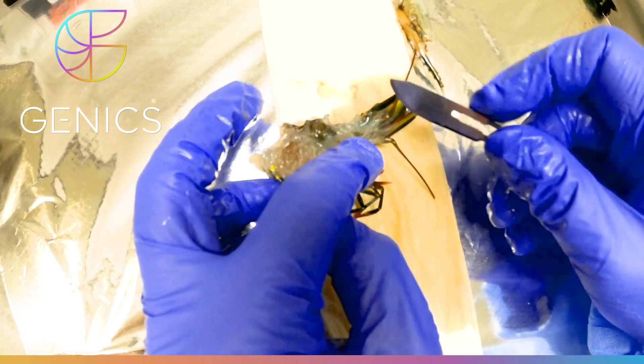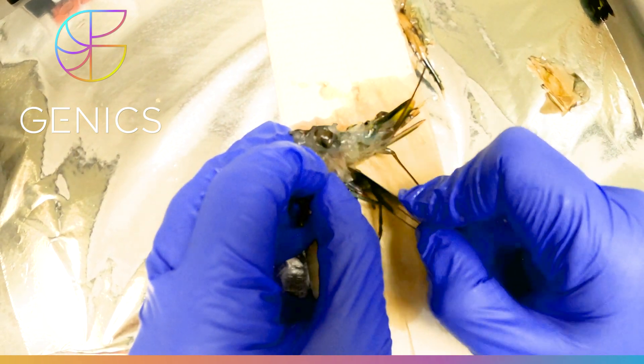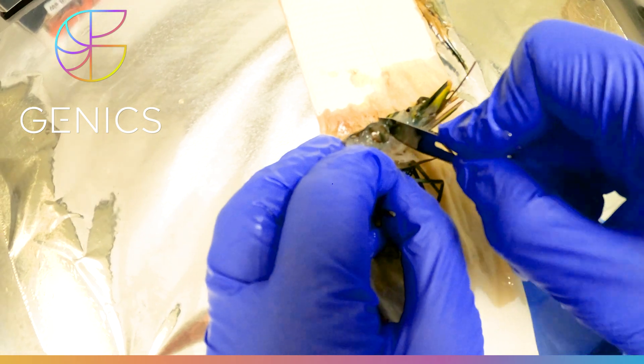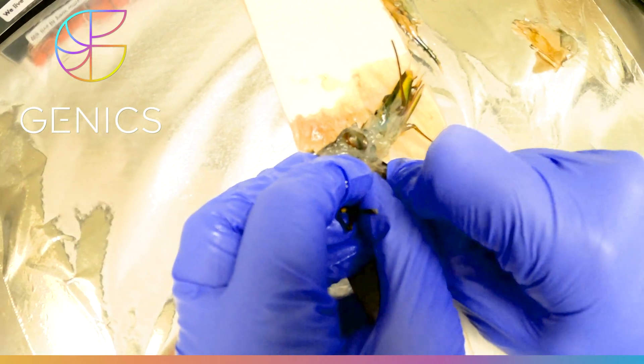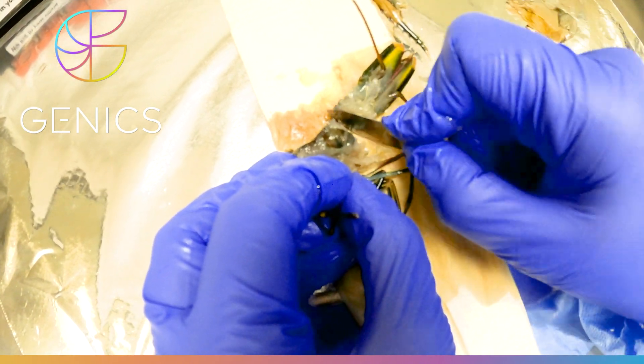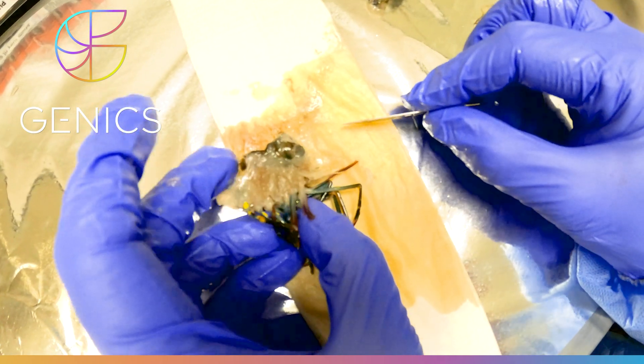So if we turn it onto our side and we cut through the mouthpiece in a cross section fashion like that, you can then remove the front end of the shrimp.